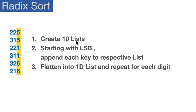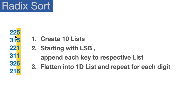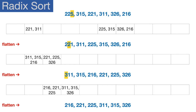We're going to create 10 lists first, or buckets. Radix sort is sometimes called bucket sort. We're going to start with the least significant bit, which is the rightmost digit in an integer. We're going to append each key — we'll call these numbers we're trying to sort the keys — to its respective list. Then we're going to flatten this into a one-dimensional list, and repeat that for each digit, starting with the rightmost, then the middle, then the leftmost. So basically three iterations, because in this case we have three digits in the longest item in the list.